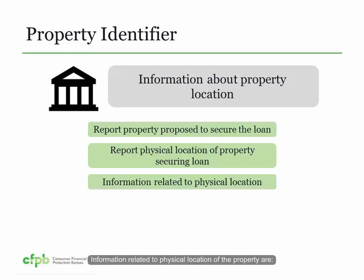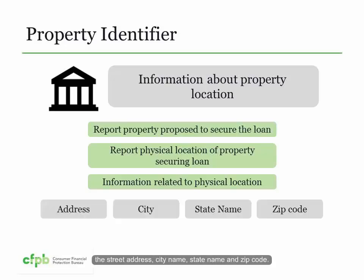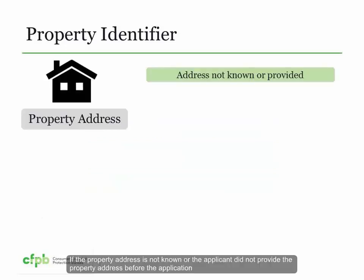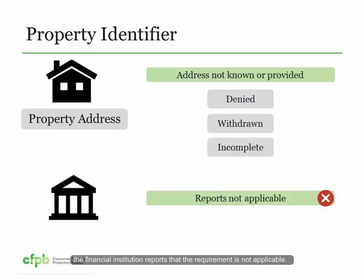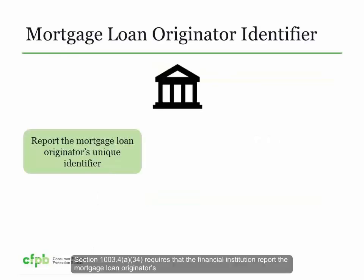Census tract is reported if the property is located in a county with a population of 30,000 or more according to the U.S. Census Bureau's most recent decennial census. Beginning with 2018 data collection, census tract is the full 11-digit number, which also contains the state and county codes. The financial institution reports only the property location information for the property taken as security, even if the covered loan relates to more than one property. If more than one property is taken as security, the financial institution reports one of the properties that contains a dwelling.